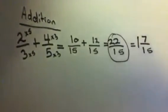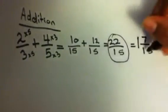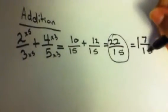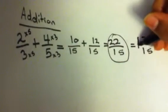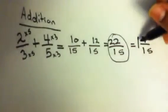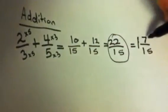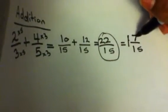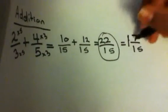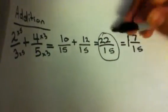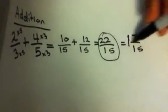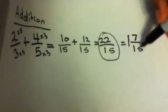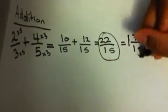An easy way to check it over again: 15 times 1 equals 15, and then 15 plus 7 equals 22, which equals 22. So it's correct.